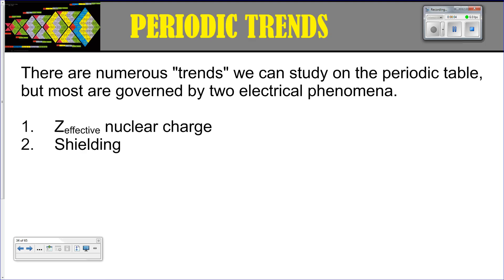Hi there, this is Coach Ickram and welcome to the first of two videos on periodic trends. Before we start talking about the actual trends on the periodic table, we have to talk about the backbone concepts of why we have trends on the periodic table. They're governed by two phenomena: Z effective nuclear charge and shielding. We're going to talk about both those concepts in a little bit more depth and then get into each of the trends individually.